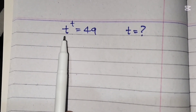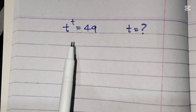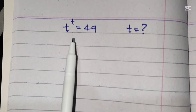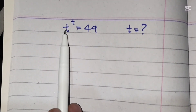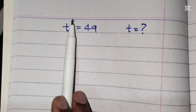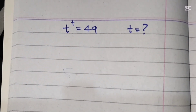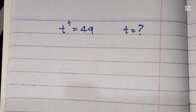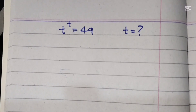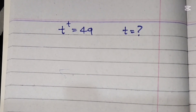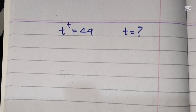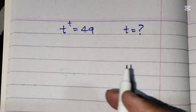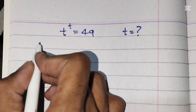A transcendental equation is an equation which involves a variable that appears both in the base and the exponent — that is, t appears in both the base and exponent. So we cannot solve this using basic algebra; we have to use the well-known Lambert W function.